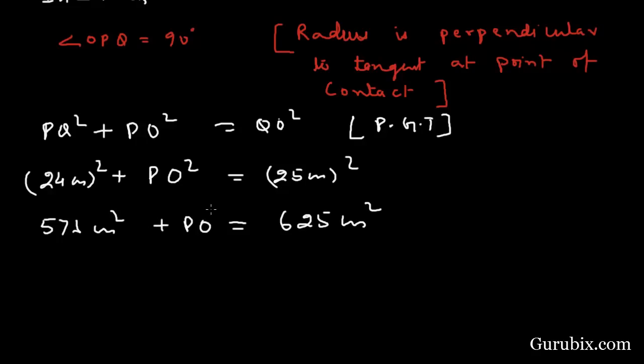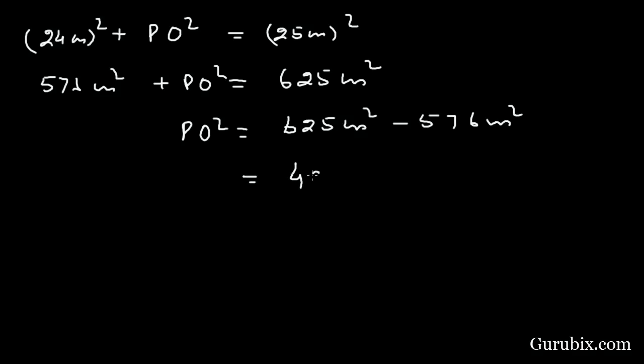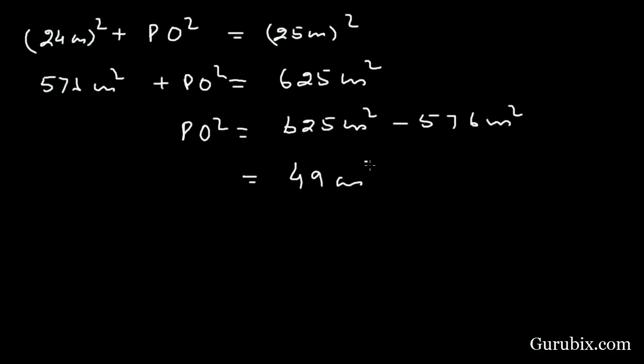This is PO². PO² equals 625 cm squares minus 576 cm squares. This equals 49 cm squares.